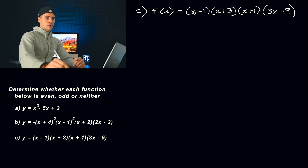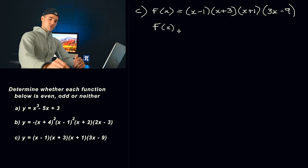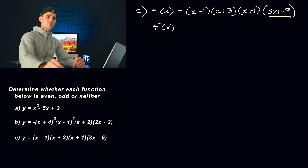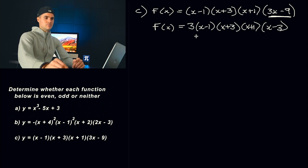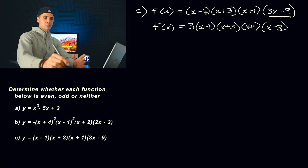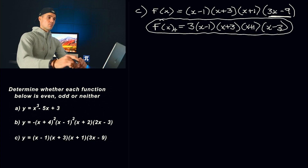Part C: another factored polynomial — x minus one times x plus three times x plus one times three x minus nine. One thing I like to always do with the original function is make sure it's fully factored. Notice that in three x minus nine, we can take out a factor of three, leaving x minus three. So fully factored, f of x equals three times x minus one times x plus three times x plus one times x minus three. You don't have to do that step, but I prefer having everything fully factored with any constants pulled out front.